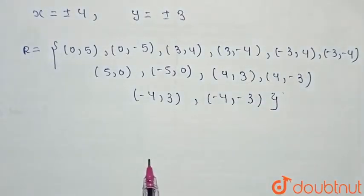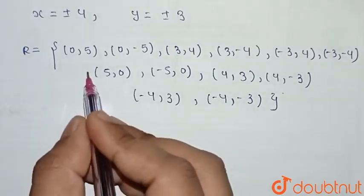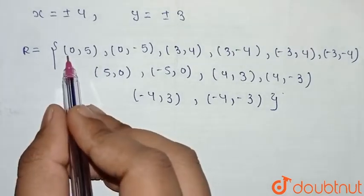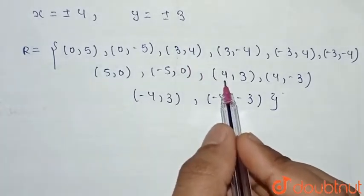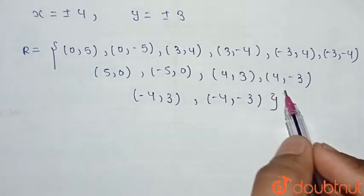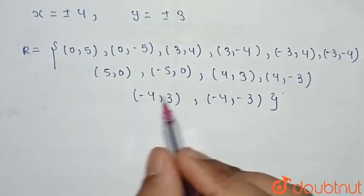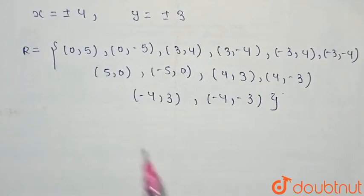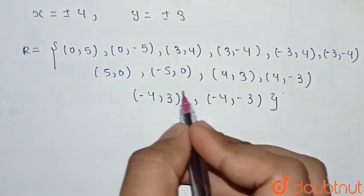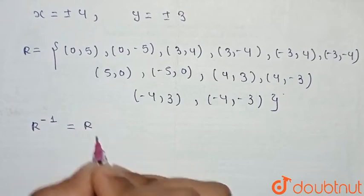Now we find R⁻¹. In R⁻¹, we swap the values of x and y. For example, (0, 5) becomes (5, 0), (0, −5) becomes (−5, 0), (3, 4) becomes (4, 3), and so on. We find that swapping the elements gives us ordered pairs already present in R. So R⁻¹ = R.